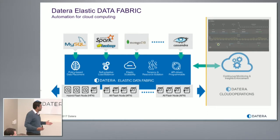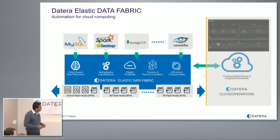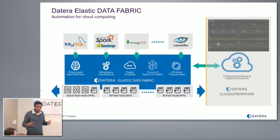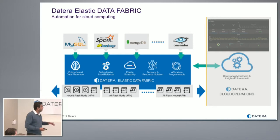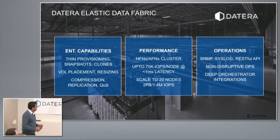We translate the performance benefits from the network and media through to the application directly. In our performance runs you'll see super low latencies even for a large scale-out cluster — that's a key aspect we want to point out. We'll also go through the cloud operations portal, which is a multi-customer, multi-cluster view. Every customer can log in and see their cluster view. From a support perspective we can see a global view and log into every customer to figure out what's happening.